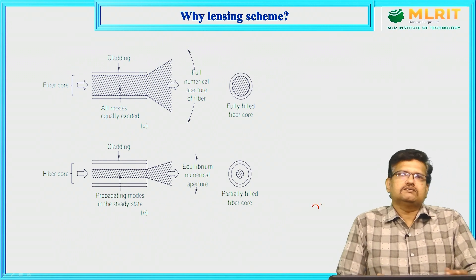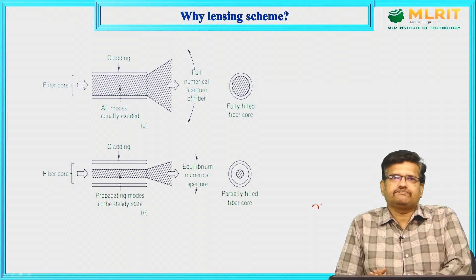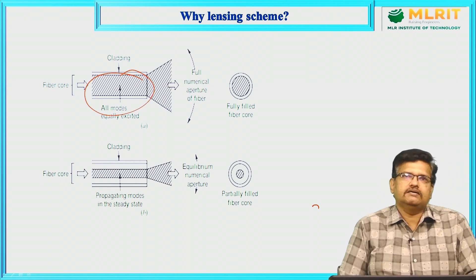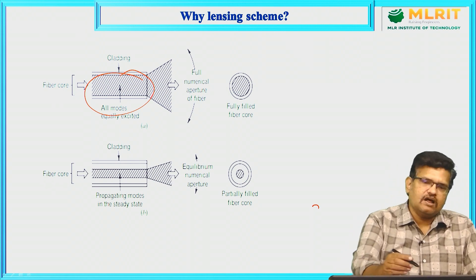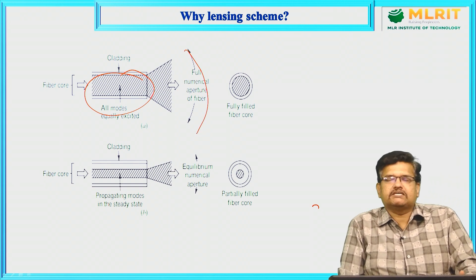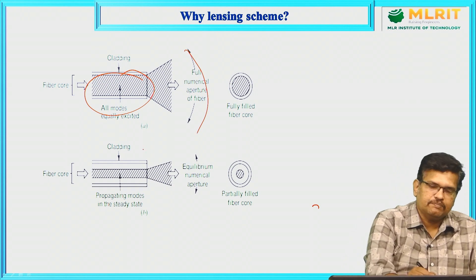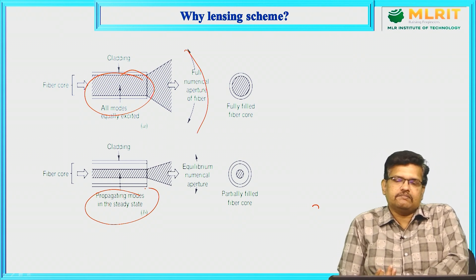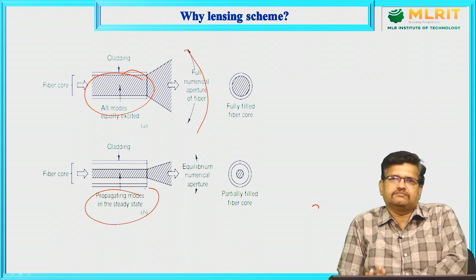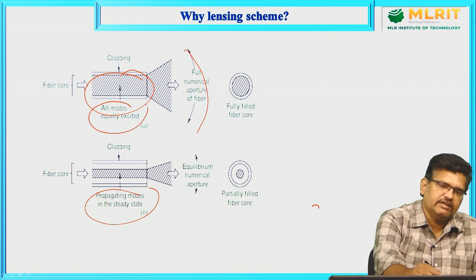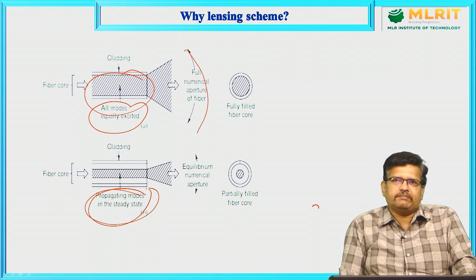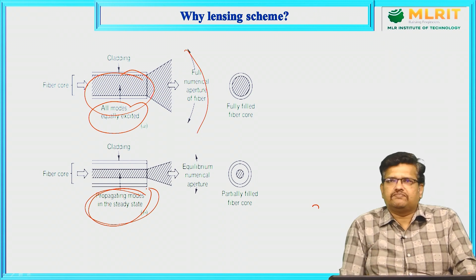If the amount of energy is fully excited and the light signal is fully occupied in the core region, we can get a very good amount of numerical aperture. But if you see the propagating mode in the steady state, the amount of numerical aperture is reduced and only partially fills the fiber core. It means not all modes are equally excited — only the propagating modes in steady state — so a limited amount of energy may enter into the fiber core area. To avoid this, we can use some lens to couple the sources.